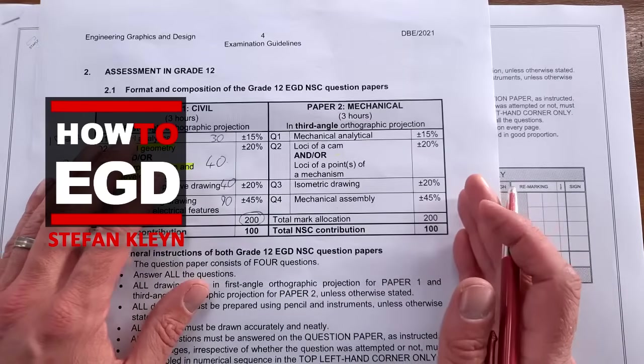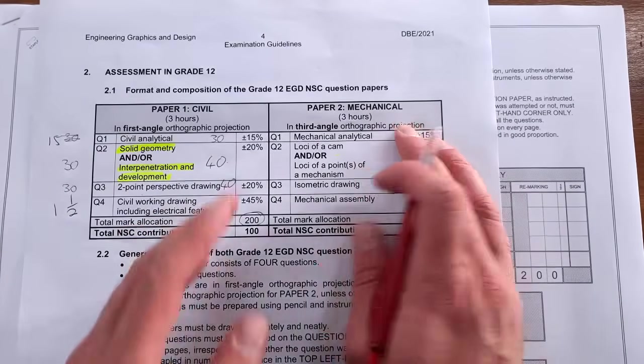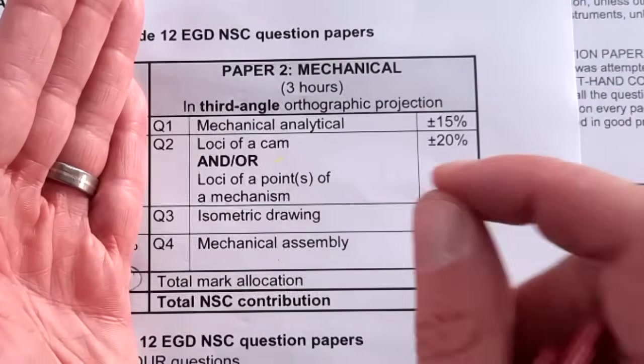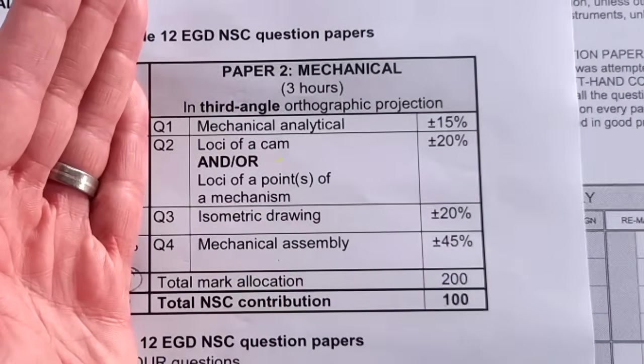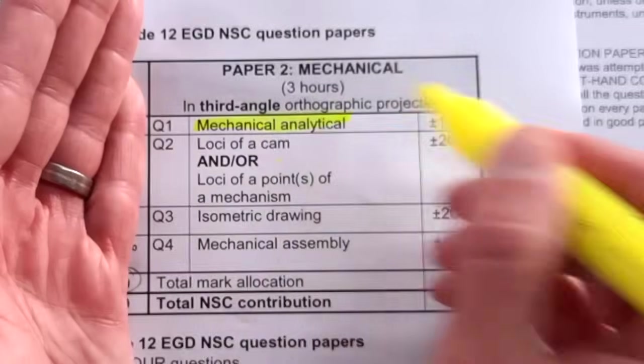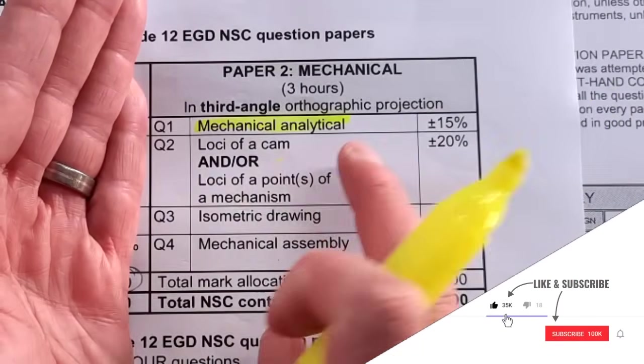Alrighty-o, how-to engineering learners, we are on Paper 2. We've just done Paper 1 and we're gonna zoom in on Paper 2 and what are the requirements that you'll have to meet in this exam. So in this video we'll be looking at mechanical analytical, which is about 15% of the question paper.